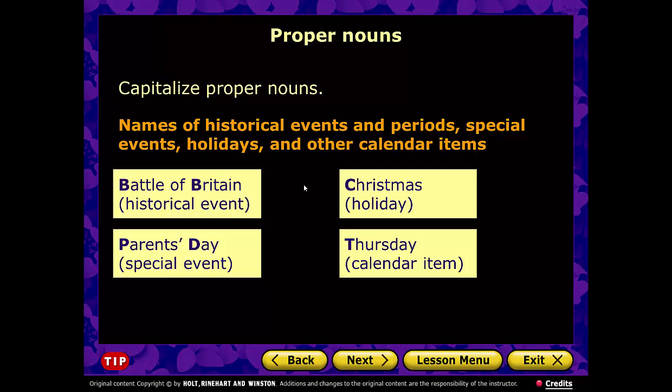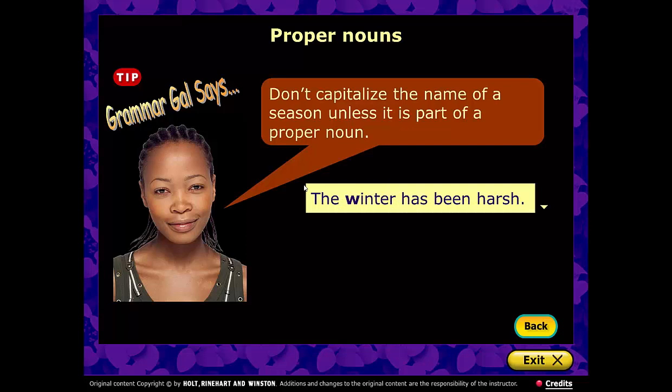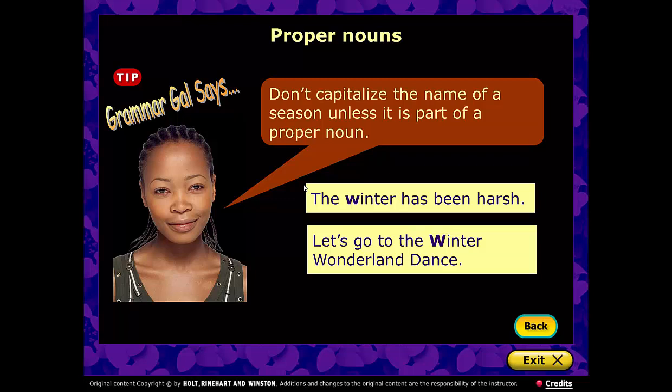Here's another tip from Grammar Girl: do not capitalize the name of a season unless it is part of a proper noun. 'The winter has been harsh' — lowercase. However, if it's part of the name of a particular event like a dance, then 'Winter' is capitalized. As we approach fall, if I said 'I love the fall season,' that F would be lowercase.